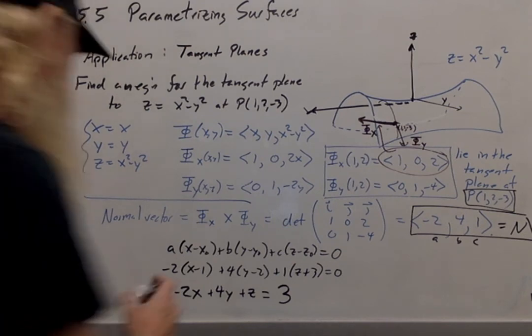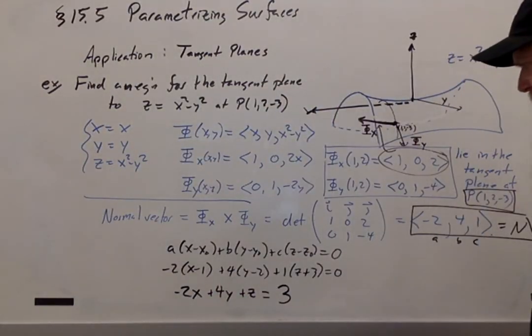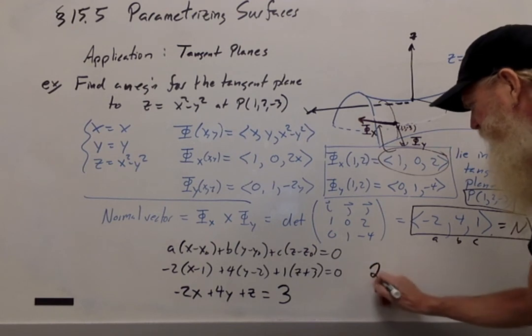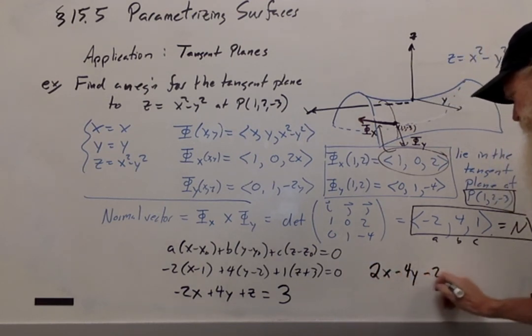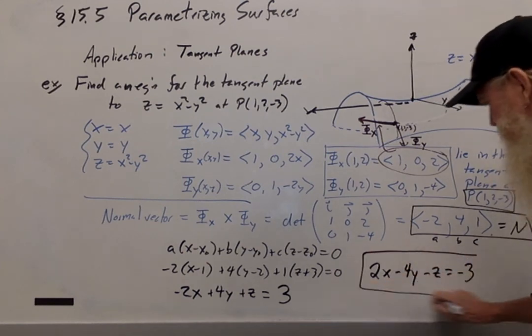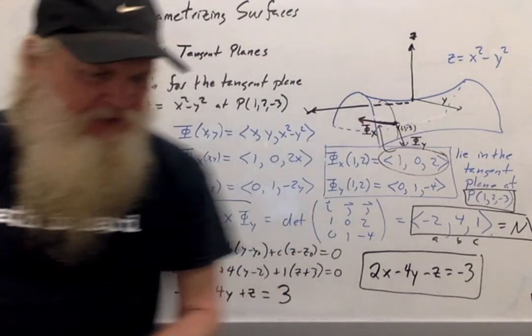Looks like we have -2x plus 4y plus z equals 3, or we can write 2x minus 4y minus z equals -3. Either one of those answers would be fine.